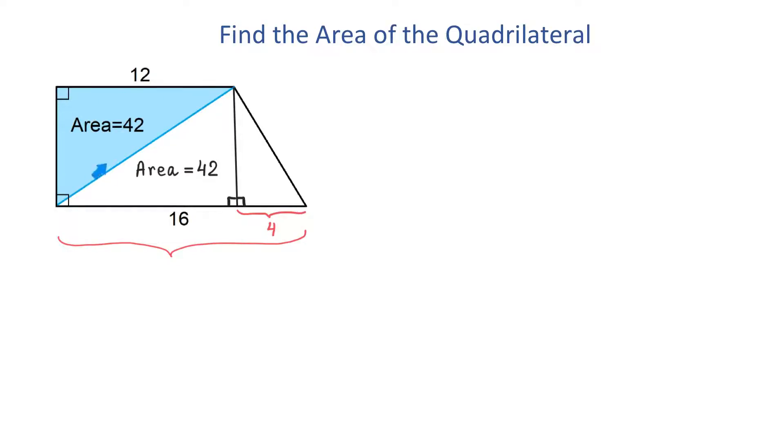Now, if we look at this blue triangle, we find the area by multiplying the base and the height and then dividing the result by 2. If in this formula we replace A with 42 and b with 12, then we will find the height.